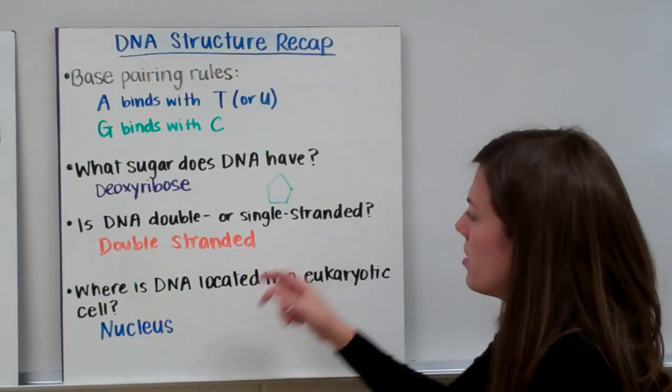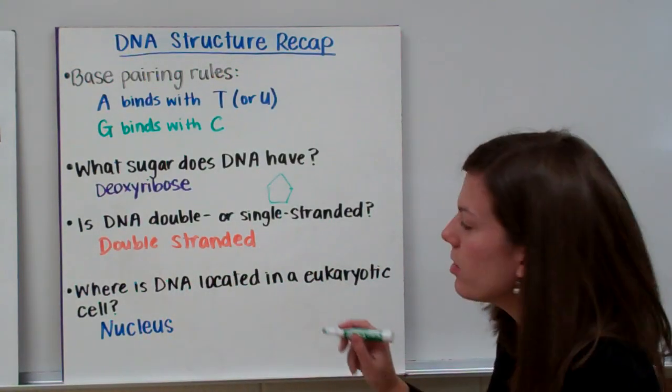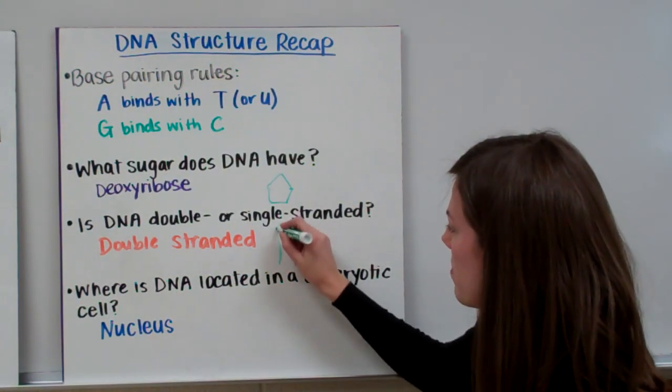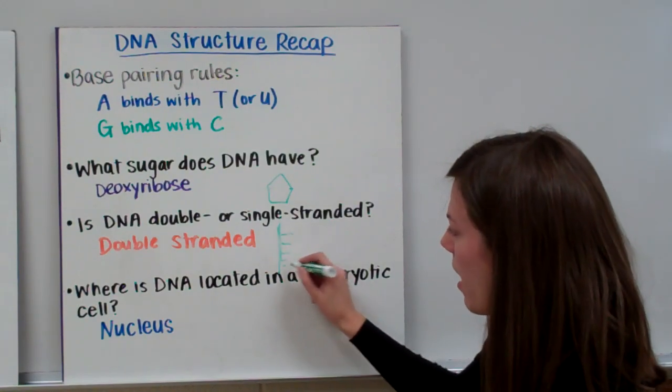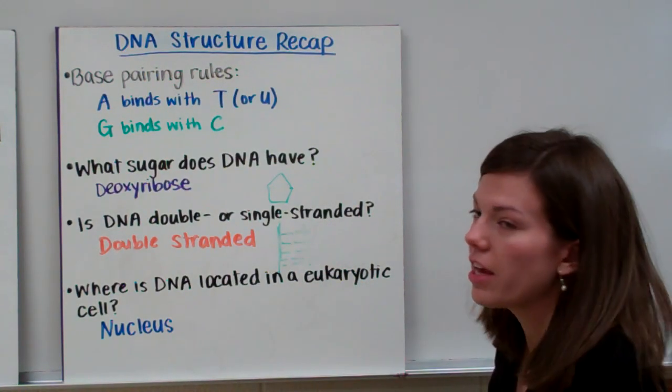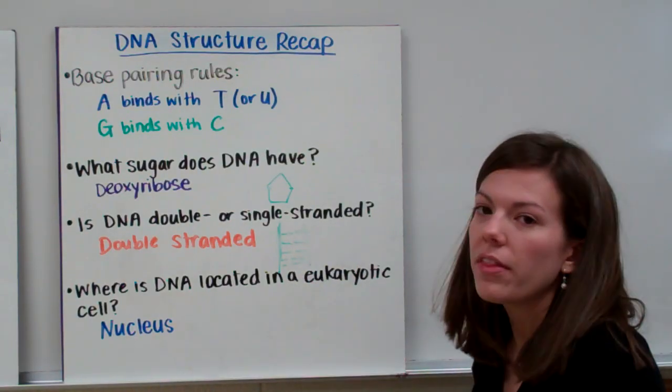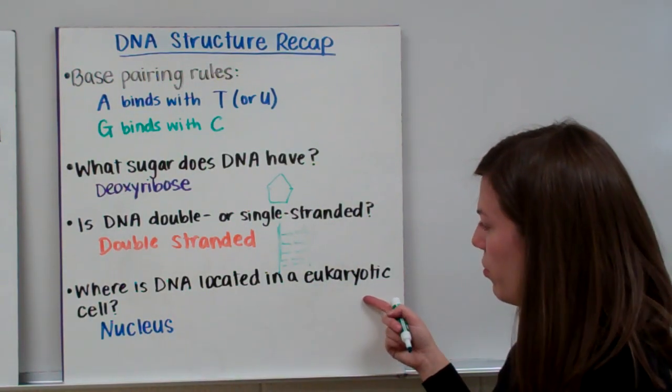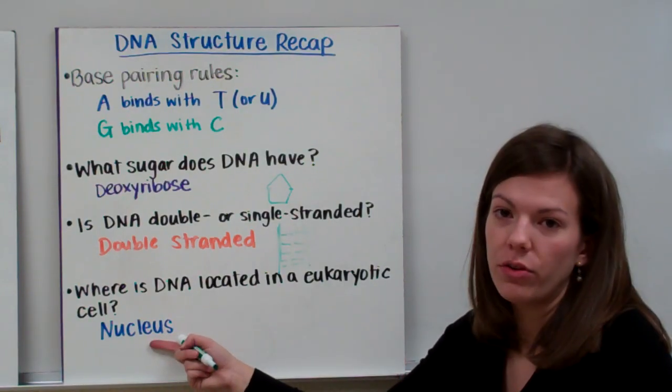Is DNA double or single-stranded? DNA is double-stranded. If DNA was single-stranded, it would look like half of a ladder, or a ladder that's been cut in half. But it's double-stranded. So we have two strands of DNA hooked together with those hydrogen bonds down the center. And where is DNA located in a eukaryotic cell? It's kept in the nucleus.